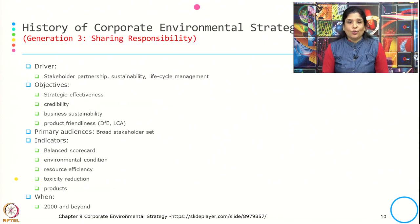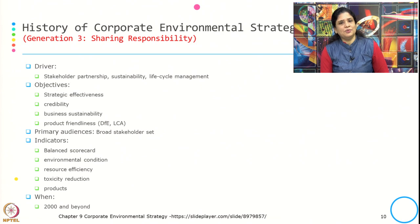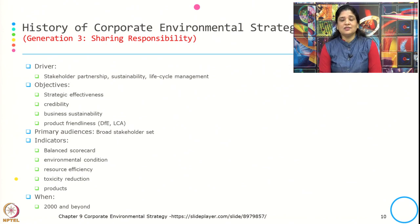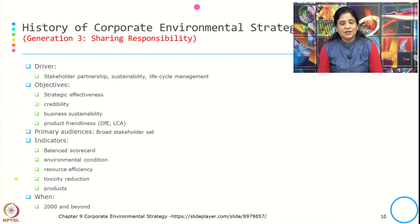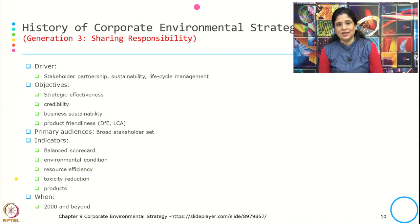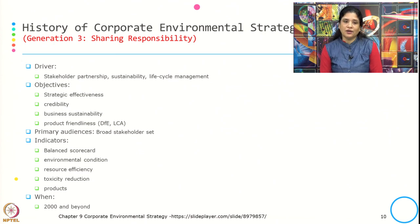Generation Three is about sharing responsibility. The drivers were stakeholder partnership, sustainability, and life cycle management. The objective for this generation is strategic effectiveness, credibility, business sustainability, and product friendliness. Tools started being used in Generation Three and the primary audience is a broad stakeholder set, because we are talking about shared responsibility. The indicators also improved — balanced scorecard, environmental condition, resource efficiency, toxicity reduction, and product metrics. The time period for Generation Three is 2000 and beyond.